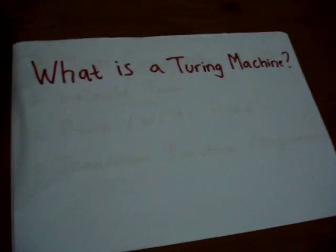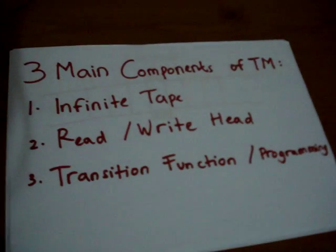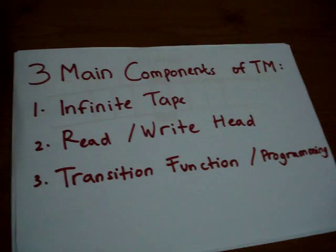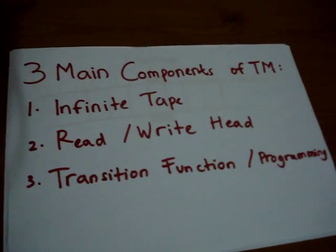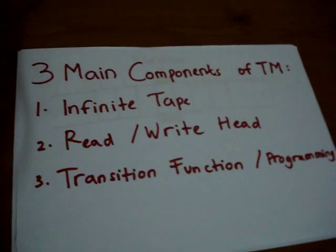Basically, there are three main components of Turing machines. It contains an infinite tape, the read and write head, and the transition function or programming.